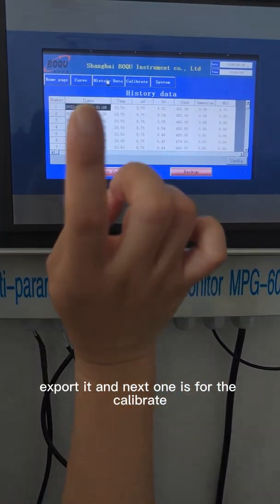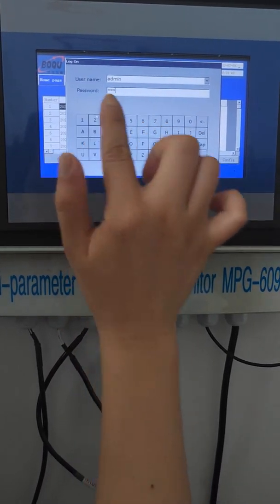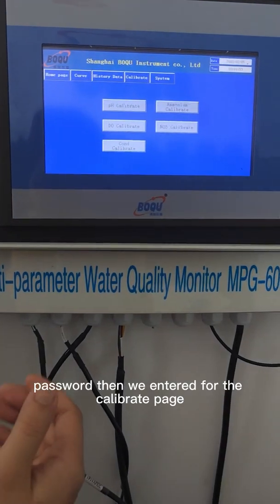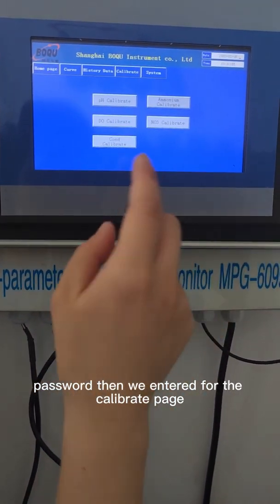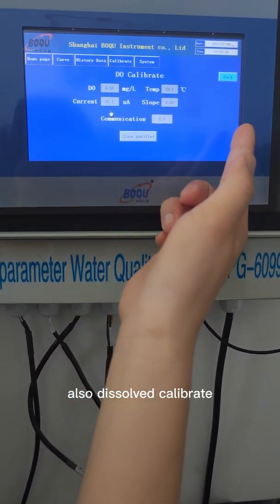Next one is for the calibration. First we input the password, then we enter the calibrate page with pH calibration and dissolved oxygen calibration. All of the sensors' calibration is right here.